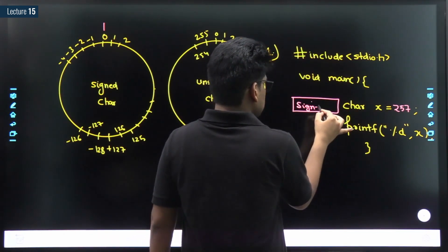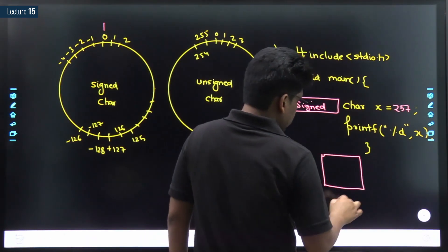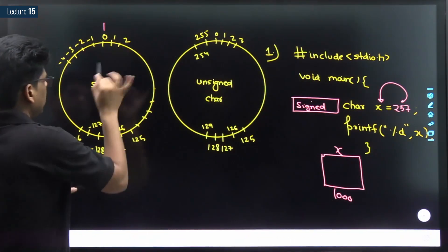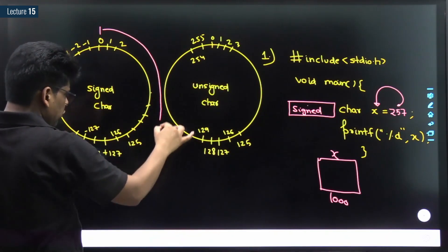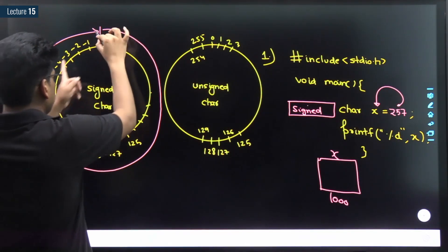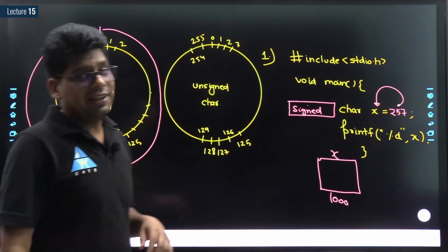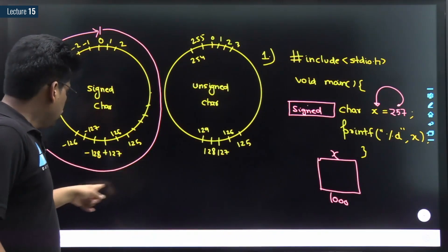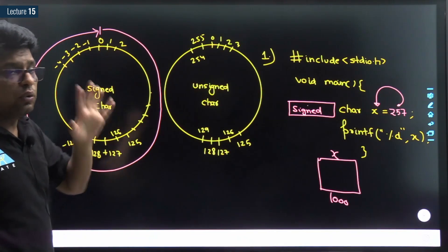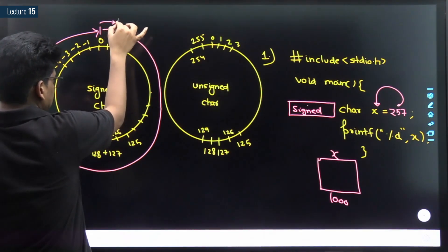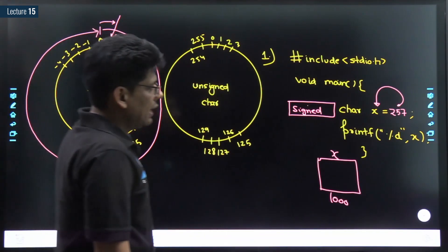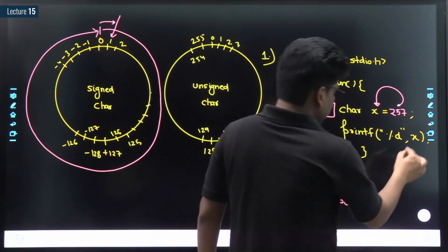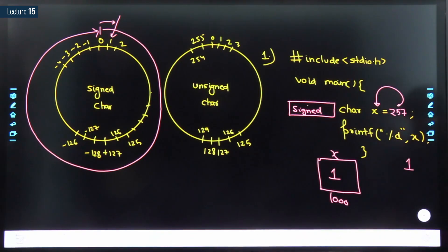That means signed char x equals 1000 — we are trying to store 257 inside the signed char. Is it present? No. Because our number is positive, we keep on moving clockwise. When we cover one full cycle from 0 back to 0, how many numbers have we covered? There are 256 numbers in every cycle. So starting from here, I covered 256 — now my number is 257, which is one more than 256. So we keep on moving one more position in the same direction, and we get 1. The value that gets stored inside x is 1, and the same value gets printed. The output of this code is 1. Please note it down carefully.